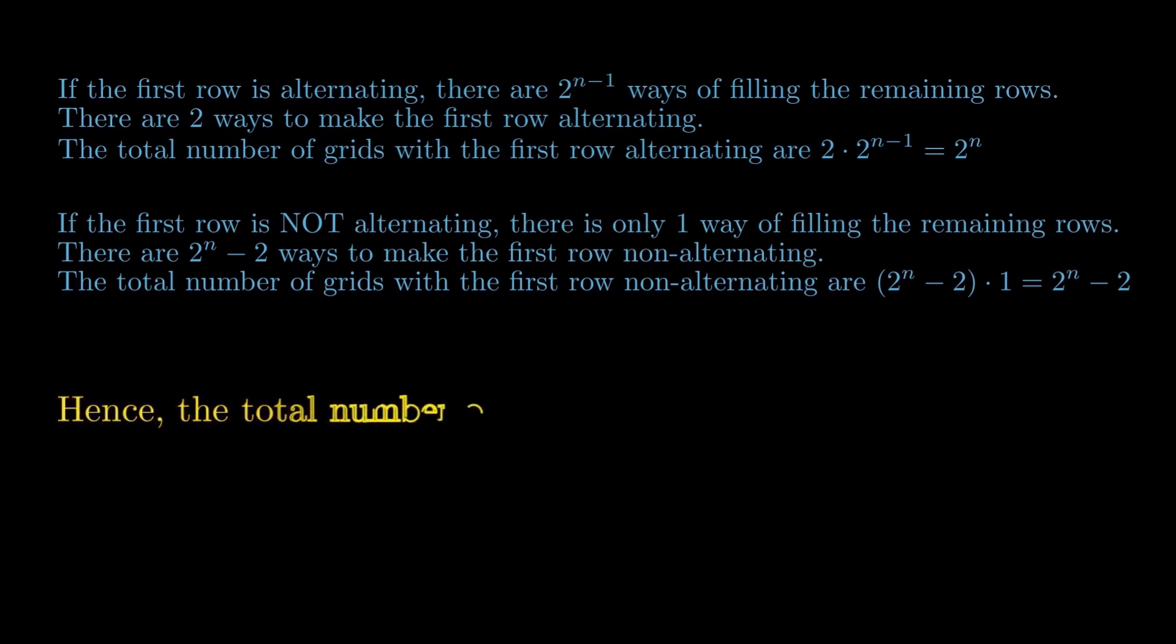Hence, the total number of grids is 2 raised to the power n plus 2 raised to the power n minus 2, which is equal to 2 raised to the power n plus 1 minus 2.